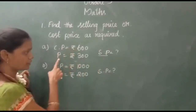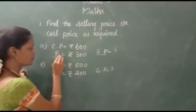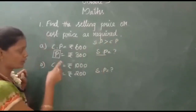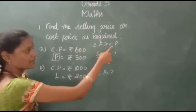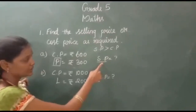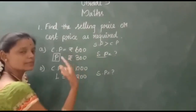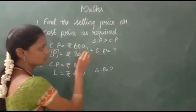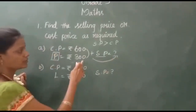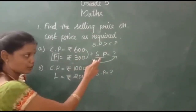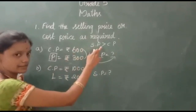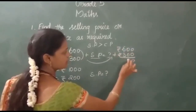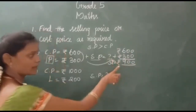Cost price is 600. Profit is 300. If it is profit, the selling price will be greater and the cost price will be lesser. So the selling price we are going to find will be a greater amount than the cost price. Since the value will increase, we use the addition operation. We are going to add these two numbers to find the selling price. Because if we get a profit, the selling price will be a greater one. So 600 plus 300 gives you 900. The selling price is equal to 900.